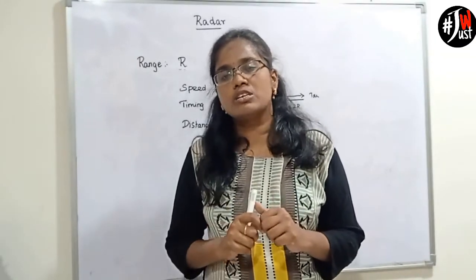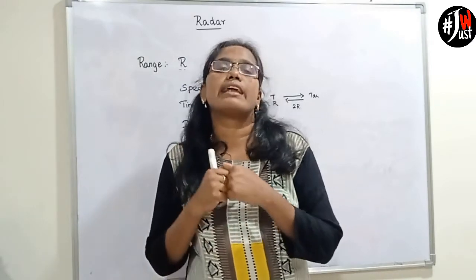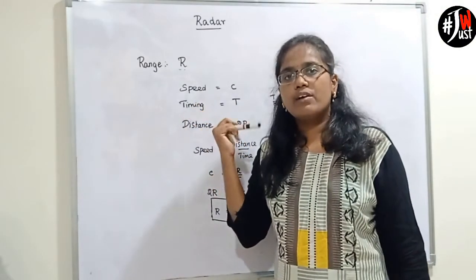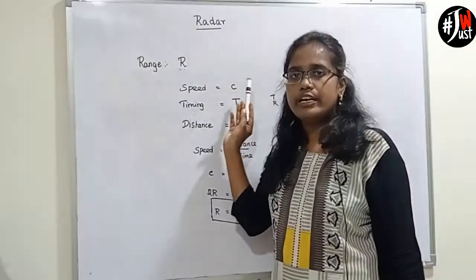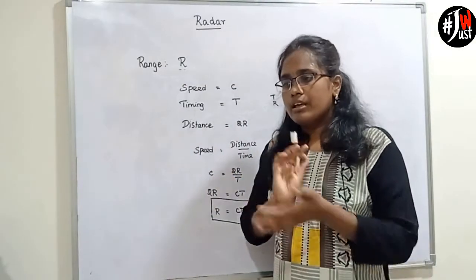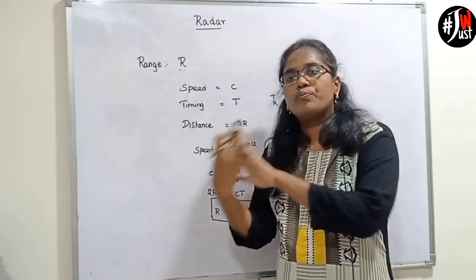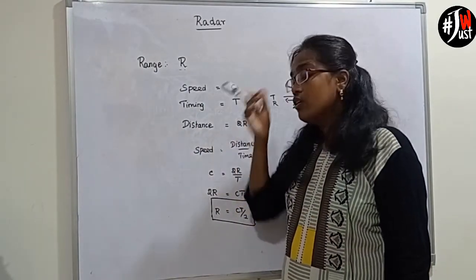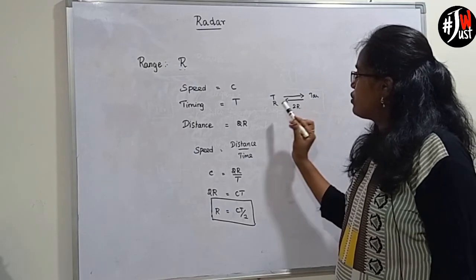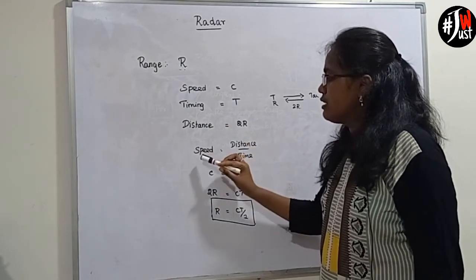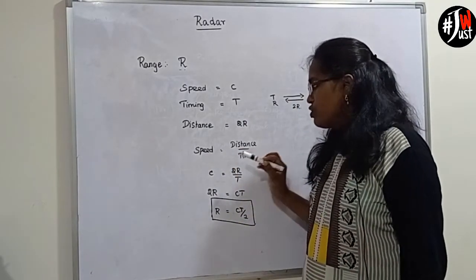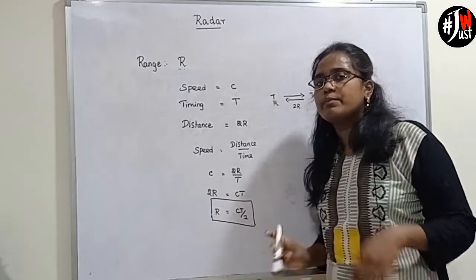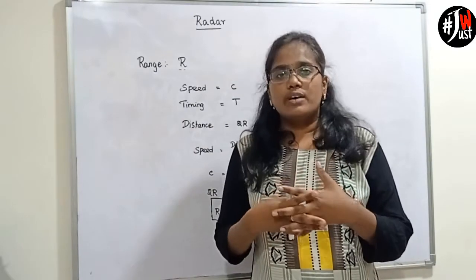What is range? Range means it is the distance between the radar and the target, and we call it R. What is the speed of the electromagnetic signal? In radar, the speed of the electromagnetic signal is the speed of light, denoted as C. The timing T means the signal travels from the radar to the target and returns back to the receiver. The distance is 2R — from transmitter to receiver and back. We know that speed equals distance divided by time, so C equals 2R divided by T. This is the basic range equation of radar.